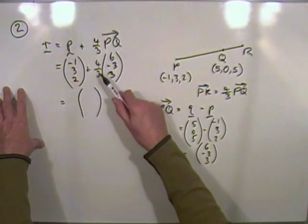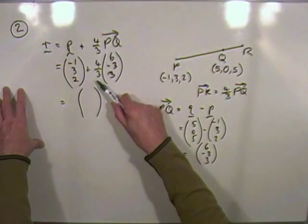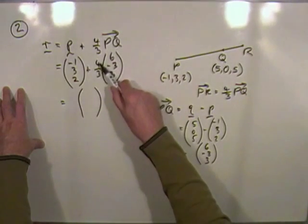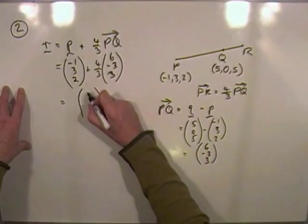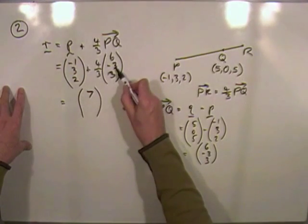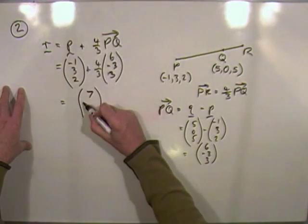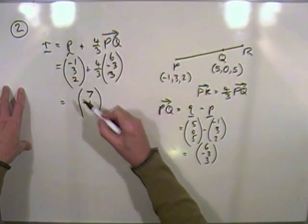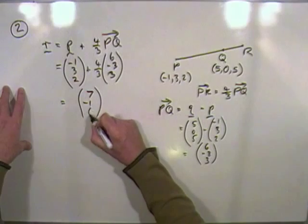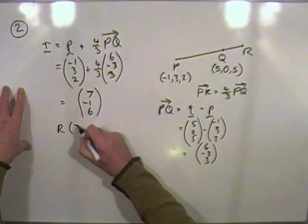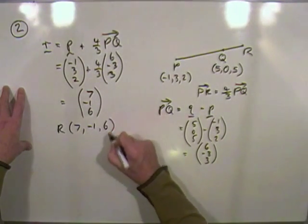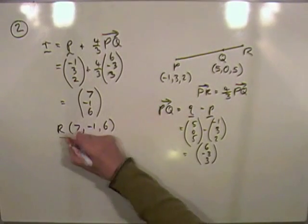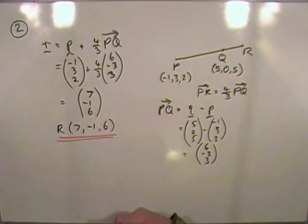Which means to get to R, I would start at P, this is its position vector, and I would add on to that 4 thirds of 6, negative 3, 3. You could just do that in one go, those calculations. So we'd say 4 thirds divided by 3, 2, 8, take away 1, 7, negative 1, negative 4, plus 3, negative 1, 3 into 3, 1, times 4, 4, plus 2, 6. Which means again R is the point 7, negative 1, 6, for part A, which I don't think I wrote down.